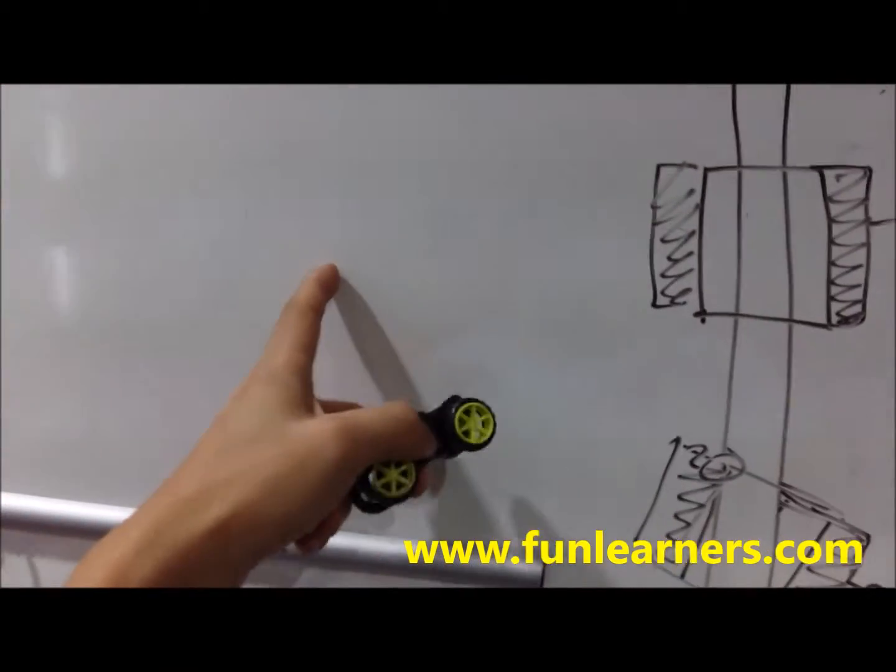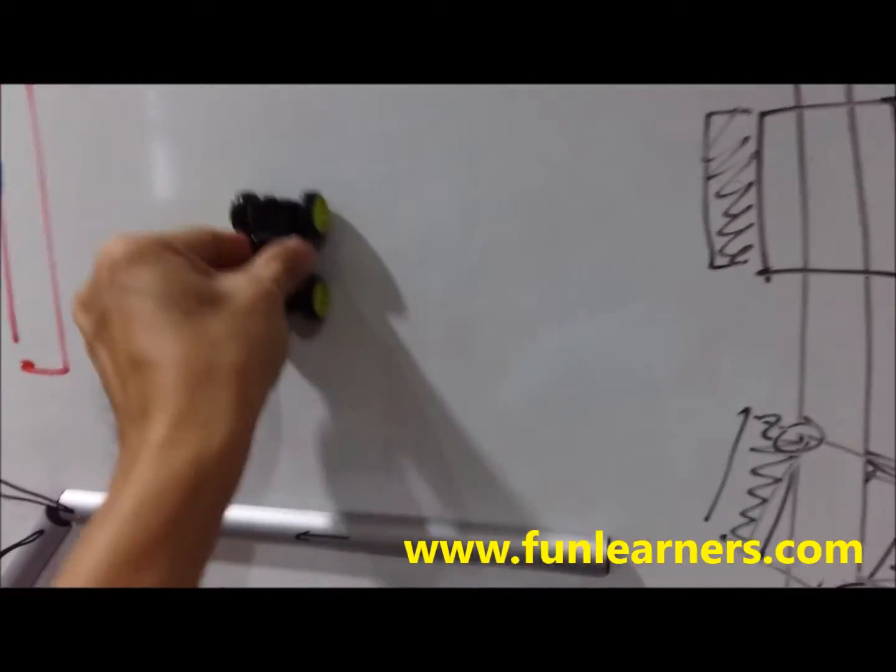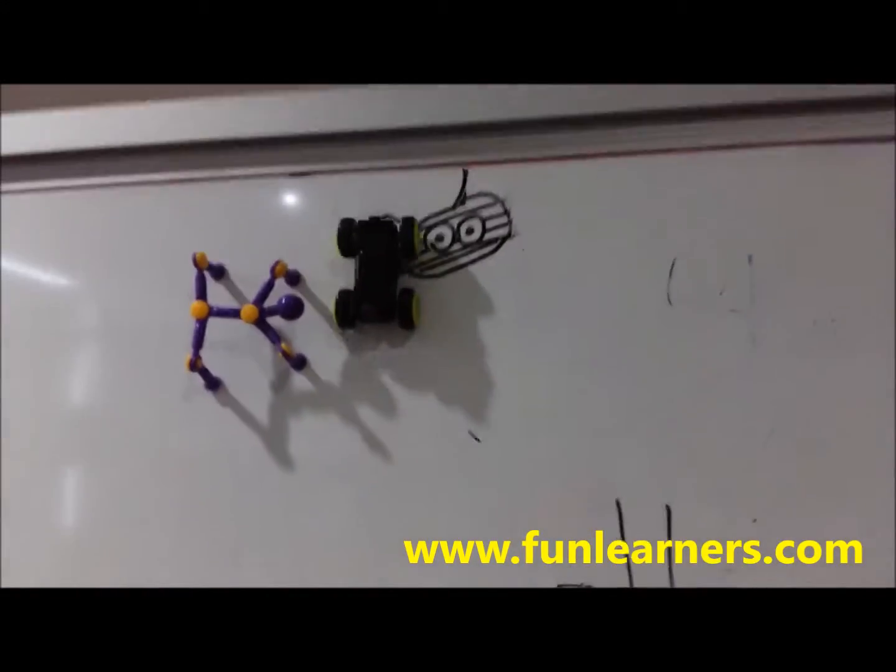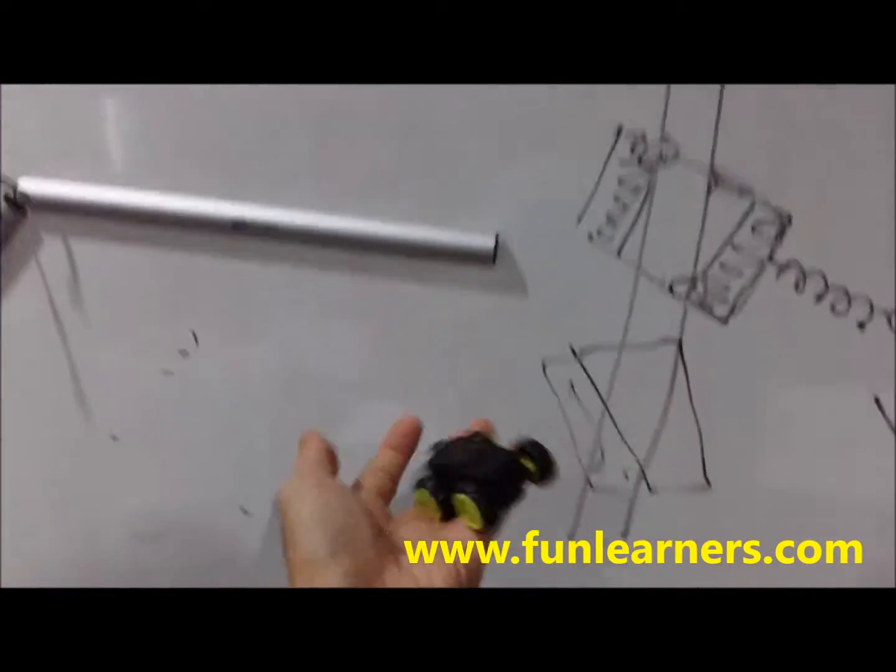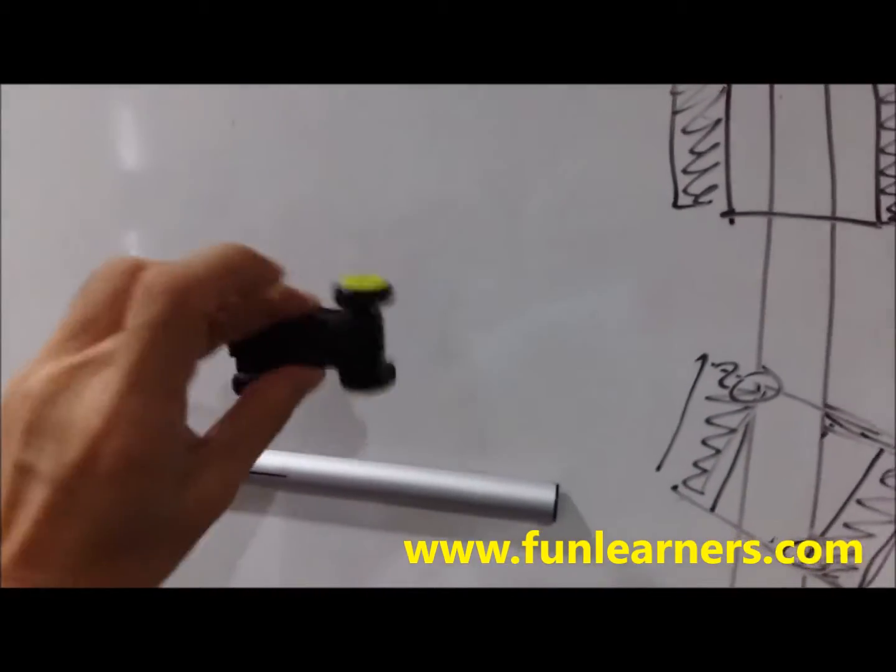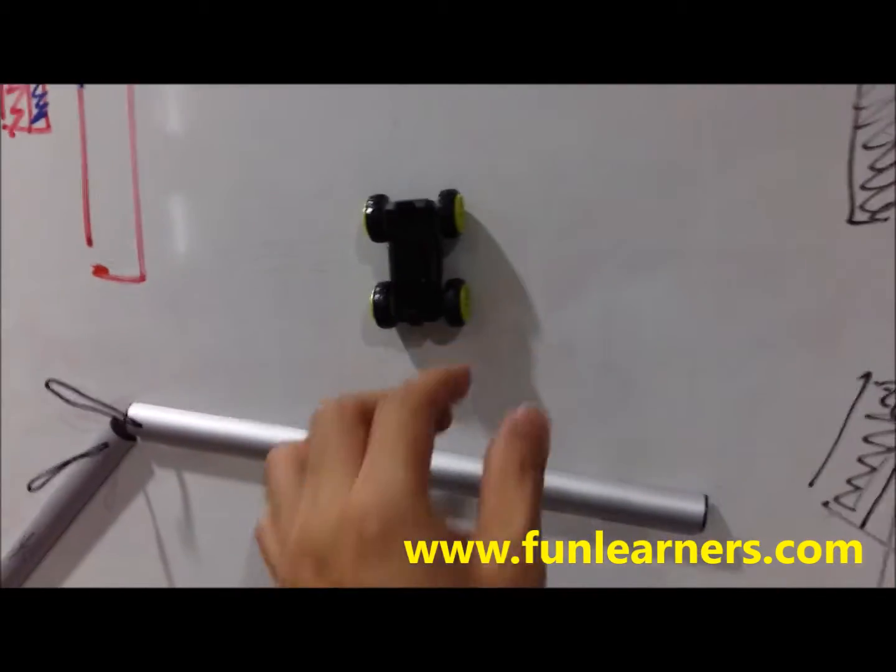This is my whiteboard. This car is interesting - it can stick on a whiteboard. The thing that causes it to stick is the magnet inside here, and this whiteboard has a piece of steel inside.